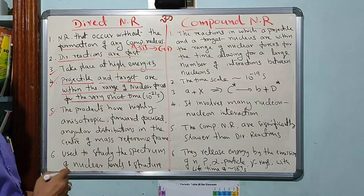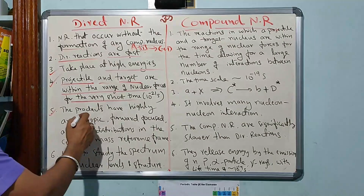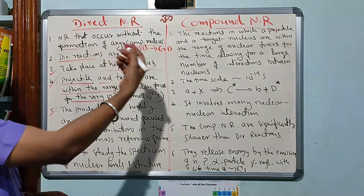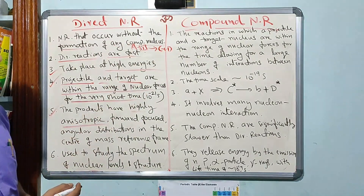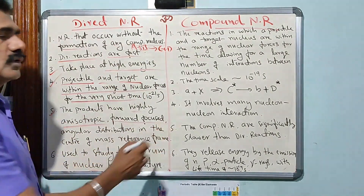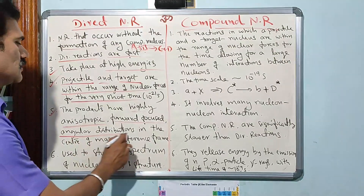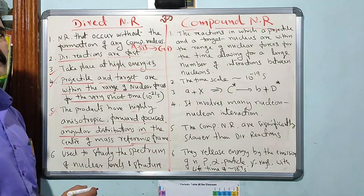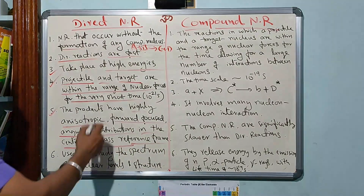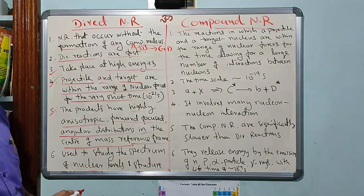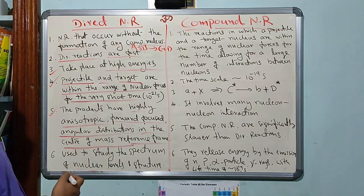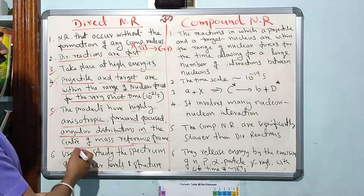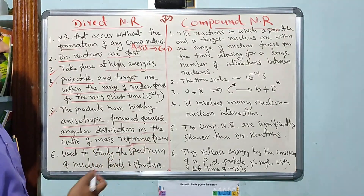The next point is that the products are highly anisotropic. Whatever products are produced in the direct nuclear reaction, they are highly anisotropic, forward-focused, with angular distributions in the center of mass reference frame.